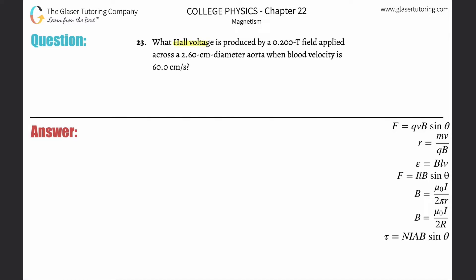Number 23, what Hall voltage is produced by a 0.2 tesla magnetic field applied across a 2.6 centimeter diameter aorta when blood velocity is 60 centimeters per second?